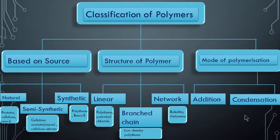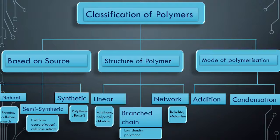This is the major classification. Whenever you read or revise this chapter, always try to keep these things in your mind. You should be able to speak these without seeing any notes or this video. Examples: natural polymers are proteins, cellulose, starch; synthetic includes polythene, Buna S. Also linear, network, branching - Bakelite is a network polymer.